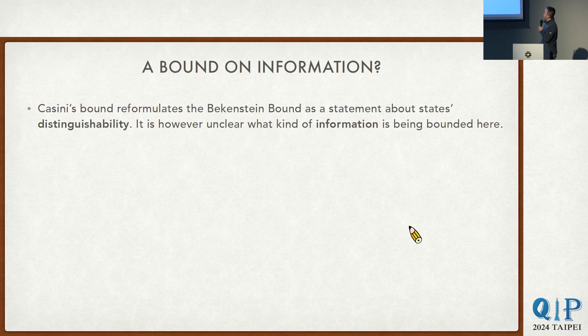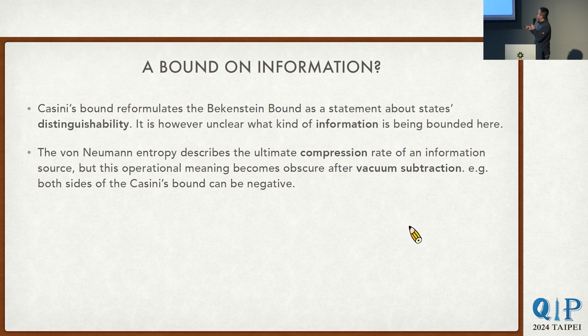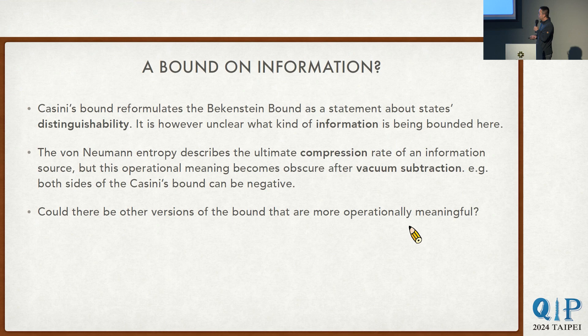You might think the positivity of relative entropy is a trivial statement, but the key insight of Casini is that the Bekenstein bound has something to do with state distinguishability, which was not previously appreciated. However, one concern is that it's unclear what kind of information is being bounded. Entropy describes the ultimate compression rate of a source, but this operational meaning becomes obscure once you subtract the infinity. So if you care about this delta S, you could have a situation in QFT where both sides of Casini's result are negative, making the meaning unclear.